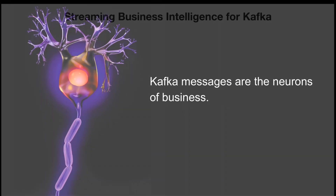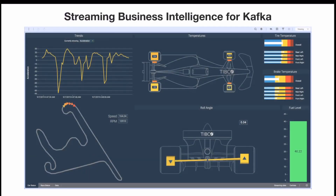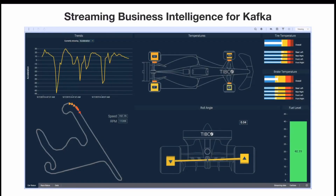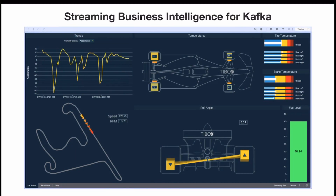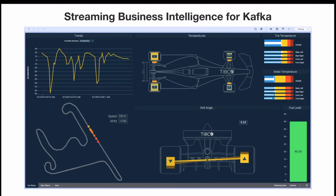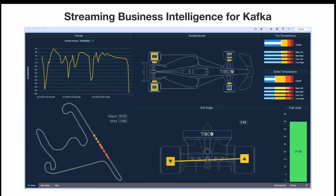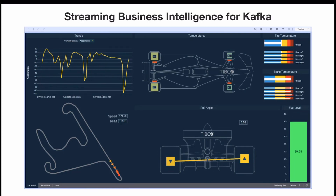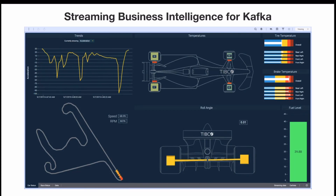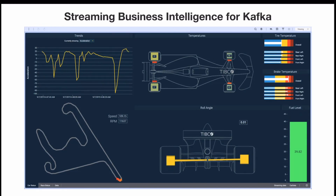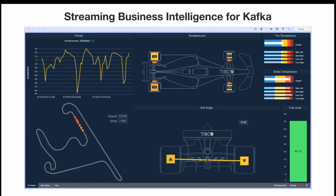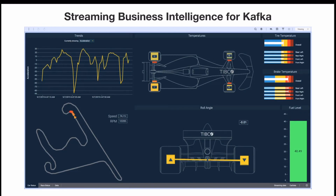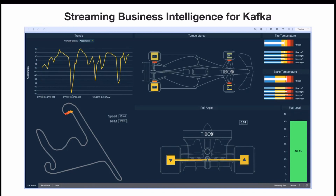The first innovation is what we call Streaming BI for Kafka. Here's an example based on our partnership with the Mercedes-AMG Formula One racing team. At first it might look like a typical BI dashboard, but it's not. It shows the real-time location of the car on the bottom left and sensor readings from the suspension and tires. The colors compare current conditions to history — red is worse than our last lap and green is better than our best lap. It's a live intelligent view of Kafka.